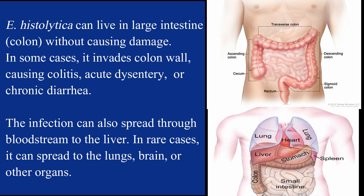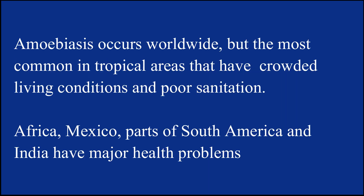Entamoeba histolytica can live in the large intestine (colon) without causing damage. In some cases, it invades the colon wall, causing colitis, acute dysentery, or chronic diarrhea. The infection can also spread through the bloodstream to the liver, and in rare cases can spread to the lungs, brain, or other organs.